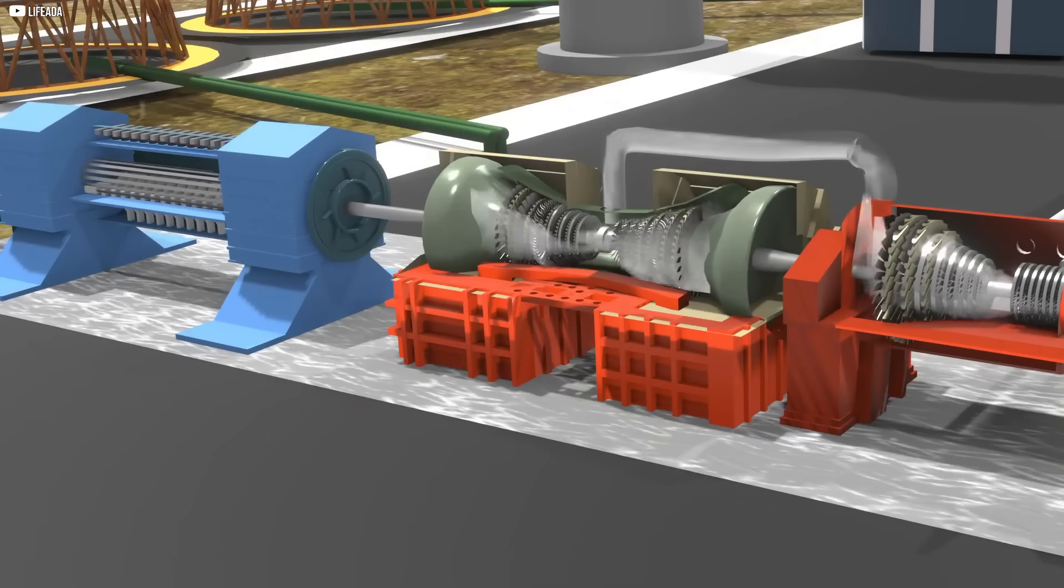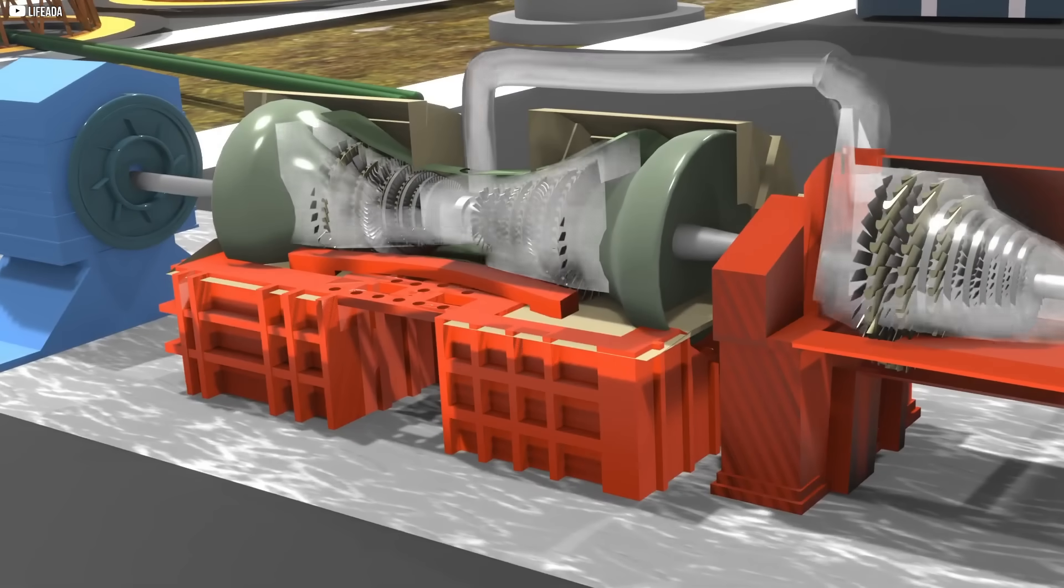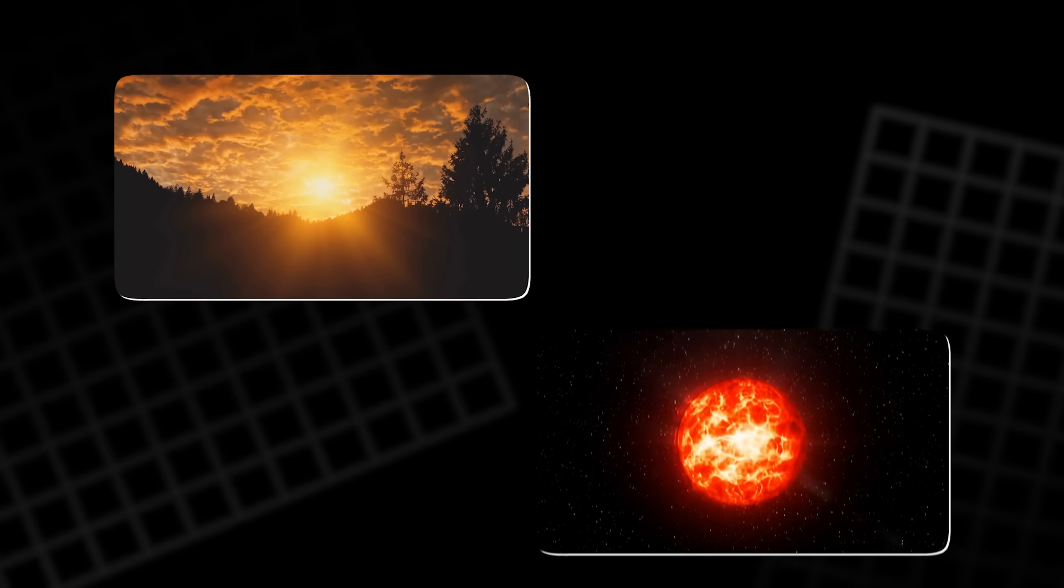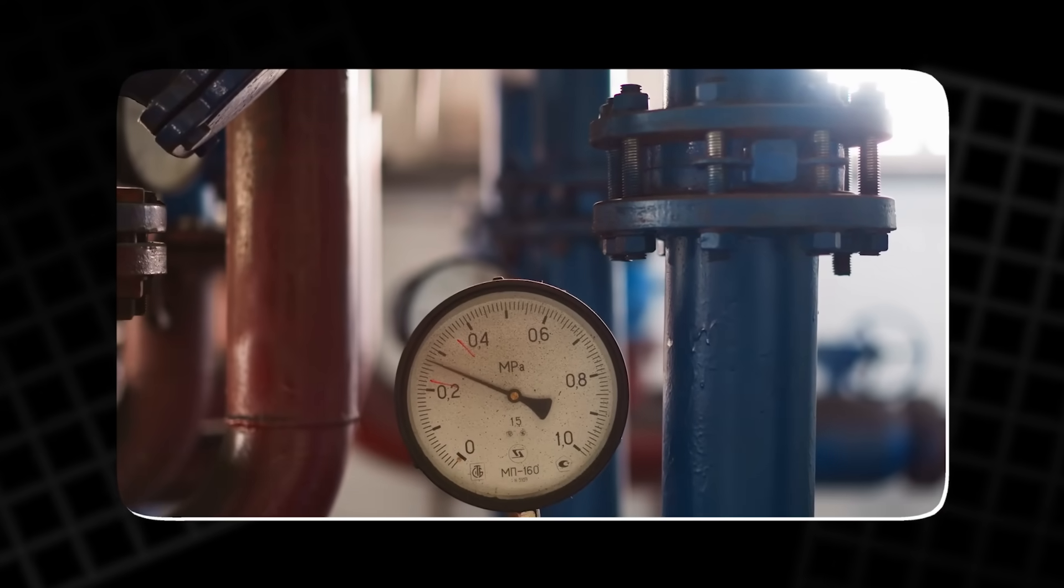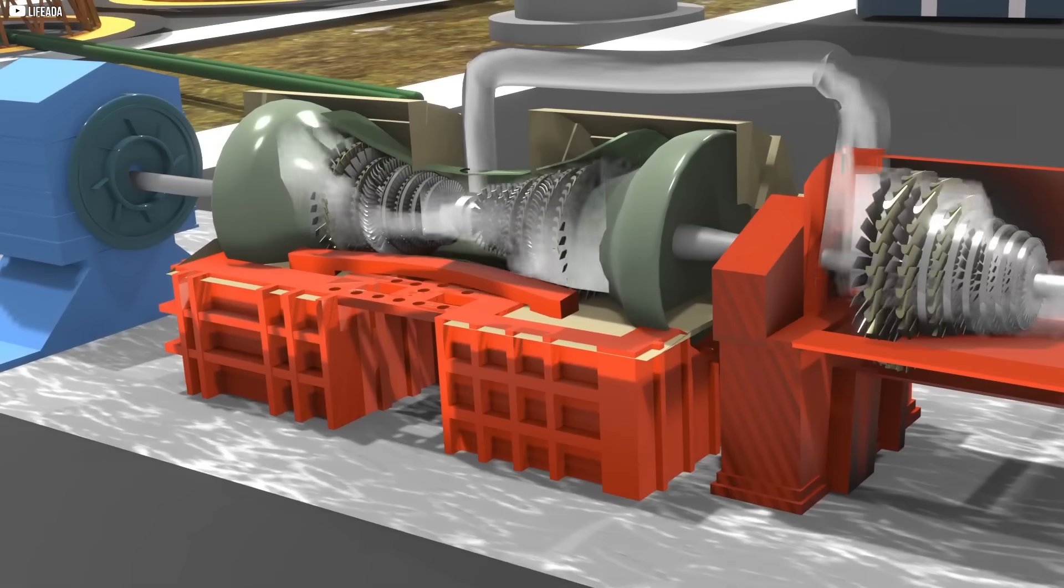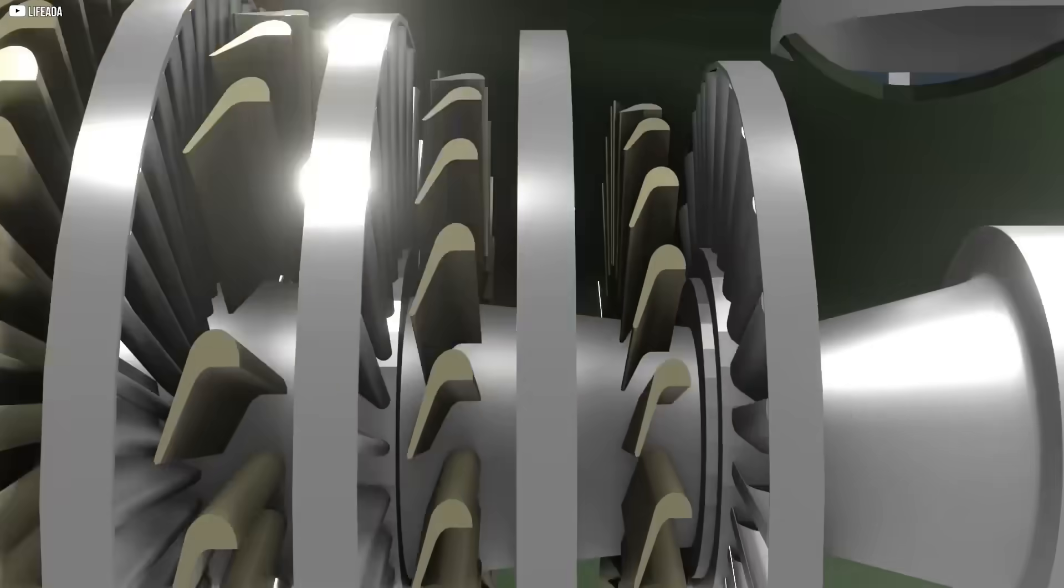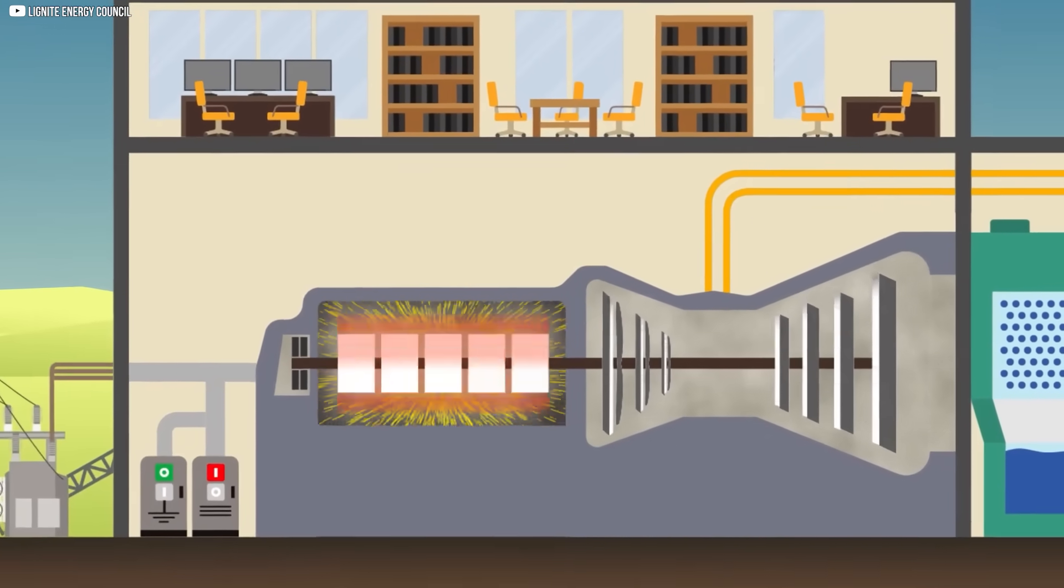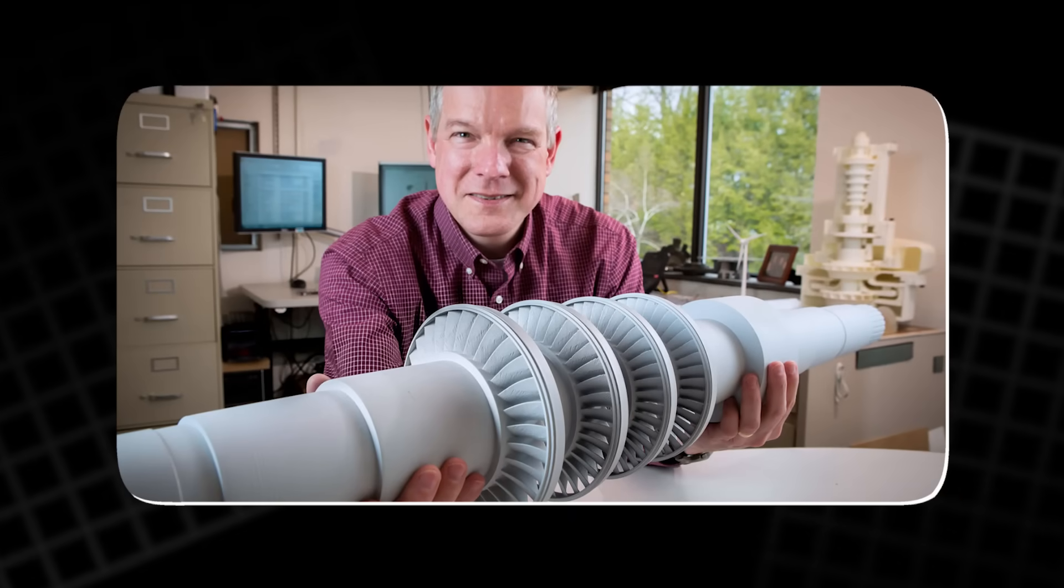With supercritical carbon dioxide, the steps change. First, the CO2 is compressed until it reaches that dense, in-between state. Then it is heated by whatever source of energy is available: sunlight, nuclear reactions, natural gas, or even waste heat from other machines. As the temperature rises, the fluid expands rapidly. That expansion creates pressure strong enough to rush through narrow channels and slam into the blades of a turbine. The force is so intense that the blades need to be thicker, heavier, and stronger than those in a steam machine. Yet the turbine itself is far smaller.